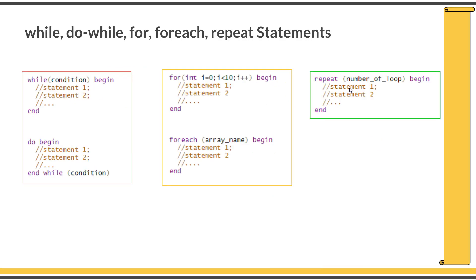These are the looping statements available in SystemVerilog: while, for, and repeat. These are again similar to those in C. For the while statement, the syntax is: while, followed by the condition within brackets, and within begin and end, the list of statements. This while block will be evaluated as long as the condition is true.